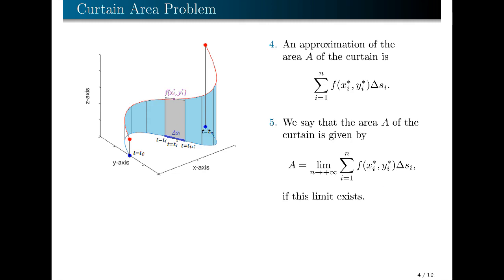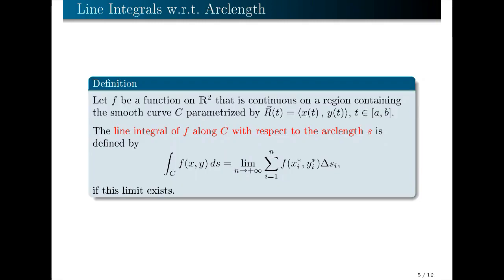This discussion leads us to the definition of the line integral of a function f in two variables x and y with respect to arc length. Let f be a function on ℝ² that is continuous on some region containing the smooth curve c, where c is parametrized by the vector-valued equation r(t) with components x(t), y(t), where t is in the closed interval [a, b]. Then the line integral of f along c with respect to arc length s is given by the limit of the summation of f(xᵢ*, yᵢ*) Δsᵢ, from i = 1 to n, as n approaches positive infinity, if this limit exists.